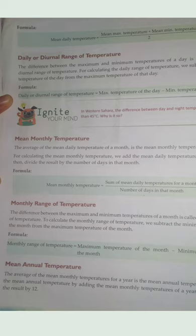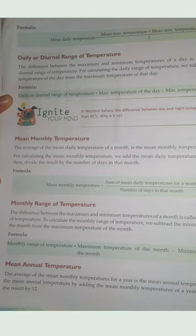Mean monthly temperature means the average temperature for a month. In a month there are 30 days. The mean daily temperature for each of those 30 days is added together and then divided by 30. This is how we get the mean monthly temperature.